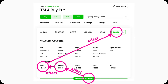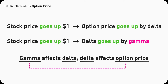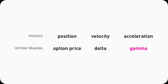Delta is the one that has a direct impact on how quickly the option price changes. So Gamma indirectly influences the option price. Here's a good analogy from high school physics class: if Delta is the velocity, then Gamma will be the acceleration — how fast the velocity is increasing or decreasing. If you've forgotten all the high school physics, never mind, let's continue.